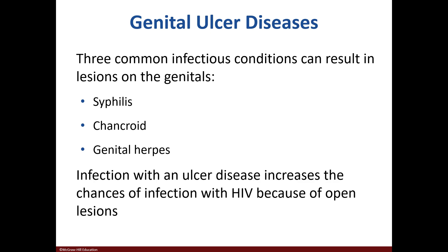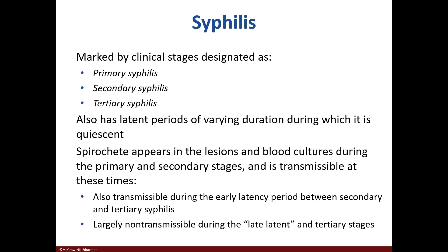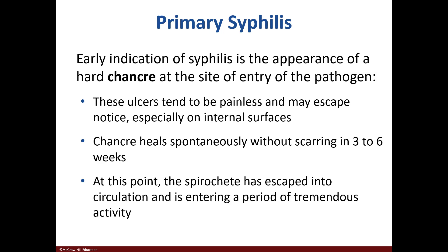Genital ulcer diseases lead to lesions and include syphilis, chancroid, and herpes. Syphilis is broken down into three clinical stages along with latent periods. The spirochete bacterium can be found in lesions and blood cultures in the first two stages. Primary syphilis includes a chancre, or ulcer, at the entry site. The ulcers are painless and heal in three to six weeks. At this stage, the bacterium has entered circulation.